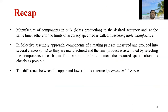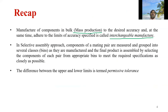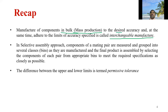Interchangeable manufacturing is used in mass production. In this approach, components are produced by different machines, by different operators at different locations. The components — both male and female parts — are selected randomly and assembled. The manufacture of components in bulk to the desired accuracy while adhering to specified limits of accuracy is called interchangeable manufacture.